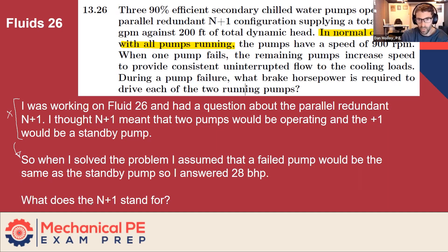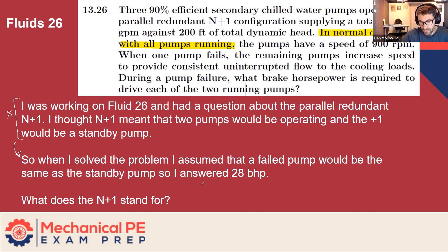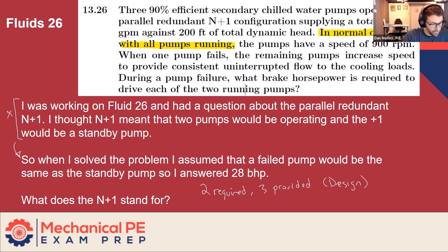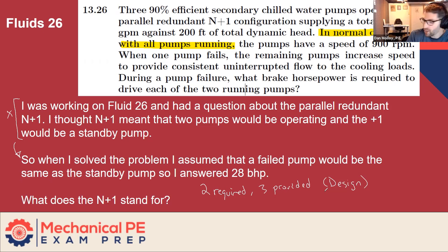So then the question becomes: what does N plus one really mean? Strictly speaking, N plus one describes the design intent. N plus one says you need two pumps required — we're going to provide three. That's from a design perspective, but that's kind of where it ends. When we look at it from an operational perspective, what are you actually going to do with those three pumps? Different operations will have a different preference as to how they want to do this and why.